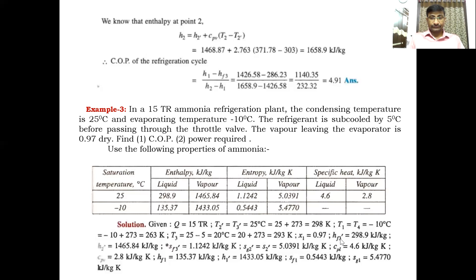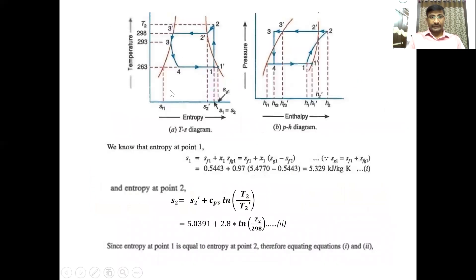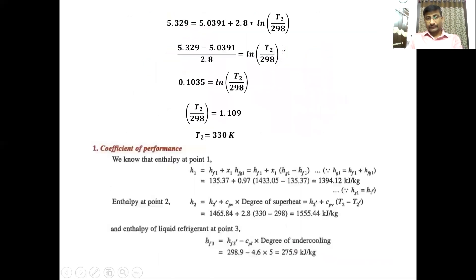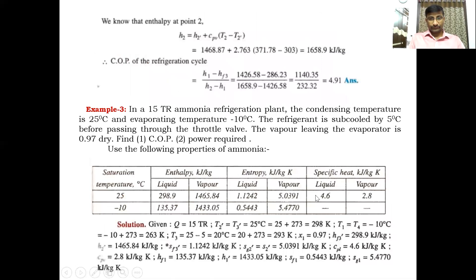From the data table: HF3-dash (liquid enthalpy at 25°C condenser operating temperature) = 298.9 kJ/kg. H2-dash (saturation vapour enthalpy at 25°C) = 1465.84 kJ/kg. SF3-dash (liquid entropy at 25°C) = 1.1242. SG2-dash (vapour entropy at 25°C) = 5.0391. Specific heat of liquid at condenser temperature = 4.6 kJ/kg·K. Specific heat of vapour = 2.8 kJ/kg·K.